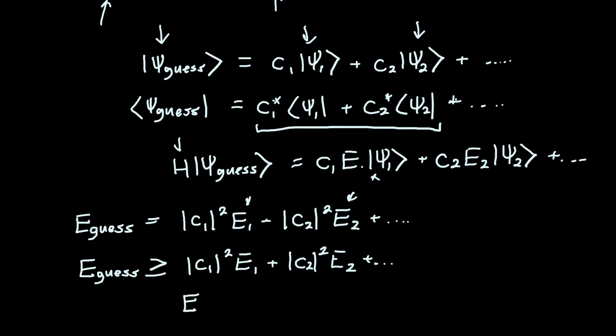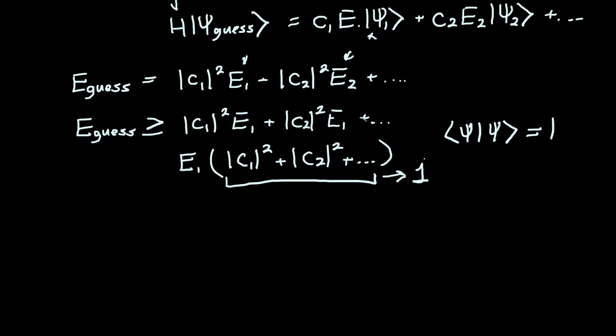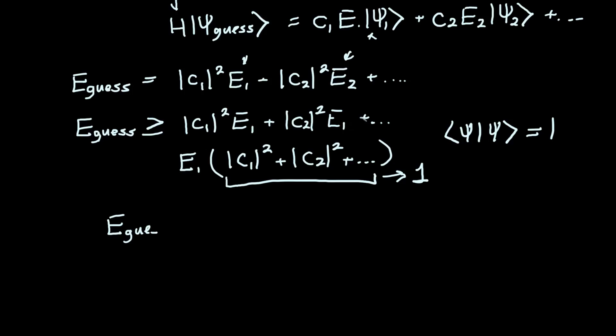And if we factor out E1, then we just add up all of these coefficients: |c1|² + |c2|² plus all the other ones. And these all must add up to one—that's just a consequence of our wave function being normalized. So what does that leave us with? That leaves us with something really simple, which is that our guess energy is greater than or equal to E1. Or in other words, our ground state energy E1 is less than or equal to this guess energy. So this is the result of the variational principle.